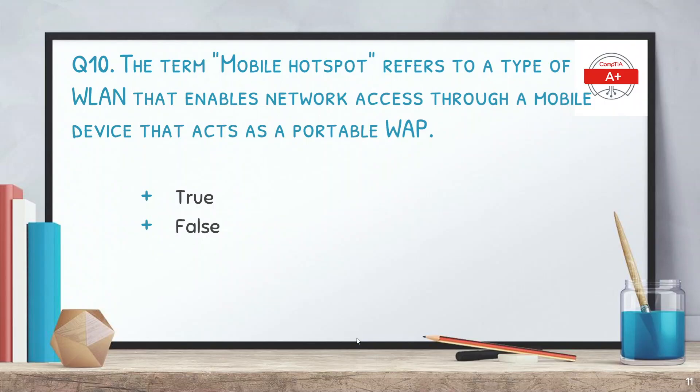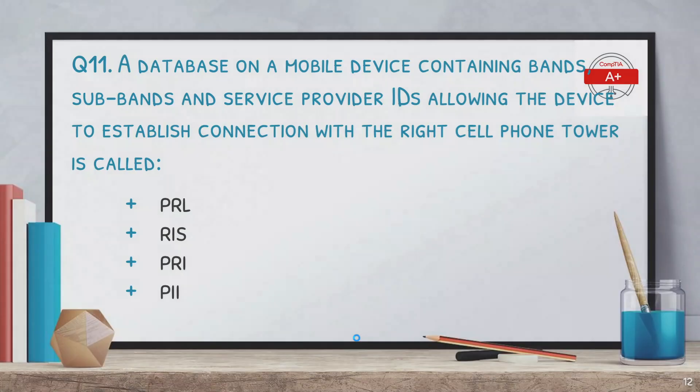The next question: the term mobile hotspot refers to a type of wireless local area network (WLAN) that enables network access through a mobile device acting as a portable wireless access point — true or false? The answer is true. We connect a mobile to the internet using 4G or LTE, then share that connection with other devices through the mobile hotspot.